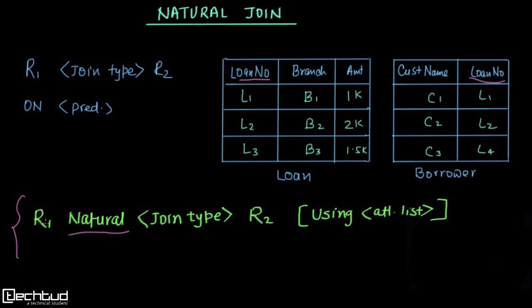The query writing style for natural join is: relation1 NATURAL join_type relation2. You can perform all types of join — inner join, left outer, right outer, and full outer join — with natural join. The USING attribute clause at the end is optional. If there is only one common attribute and you are joining on the basis of that attribute only, you need not specify it.